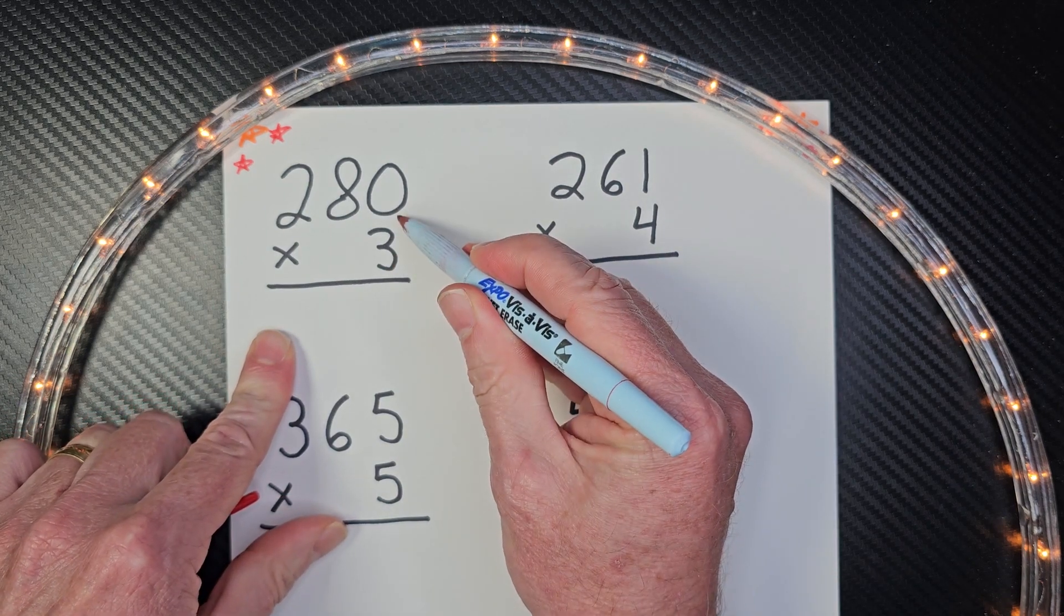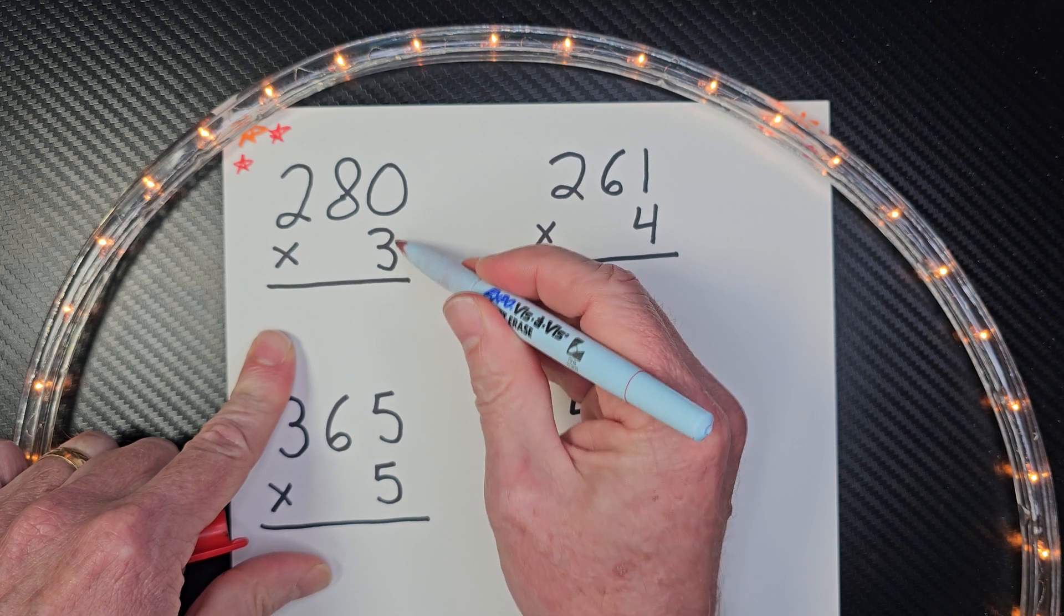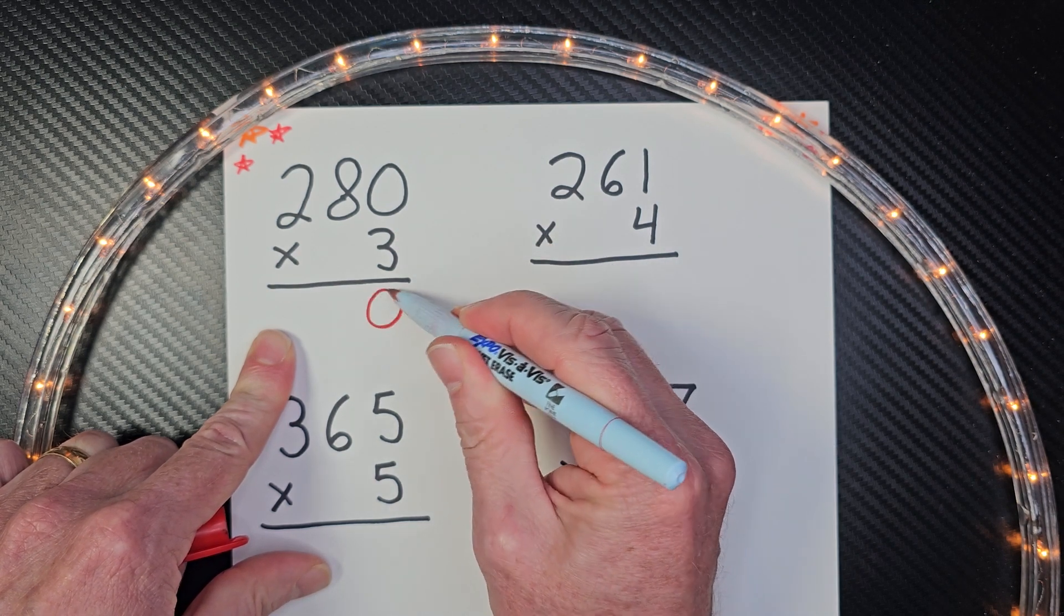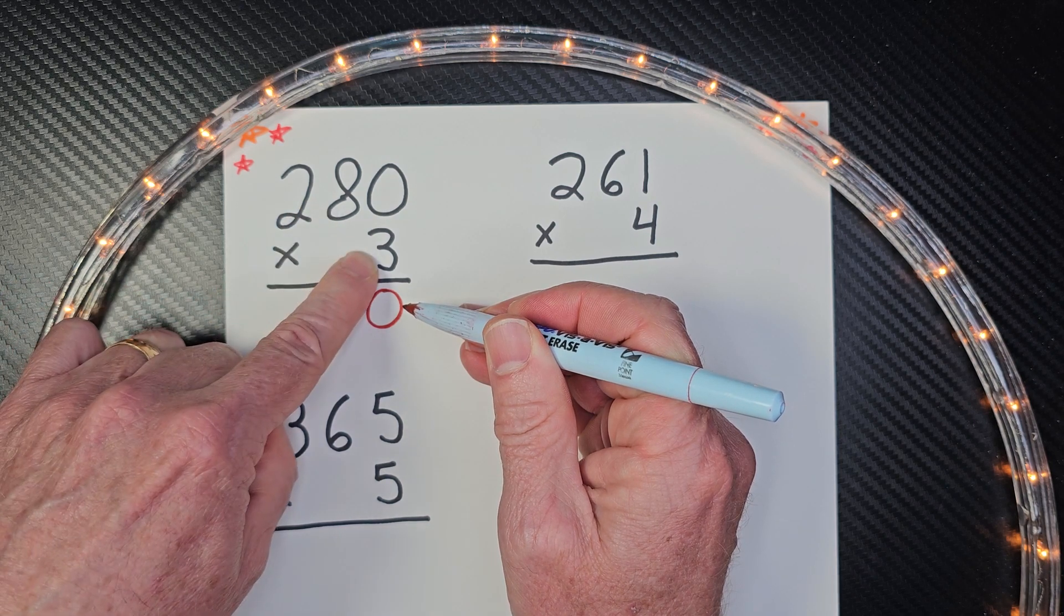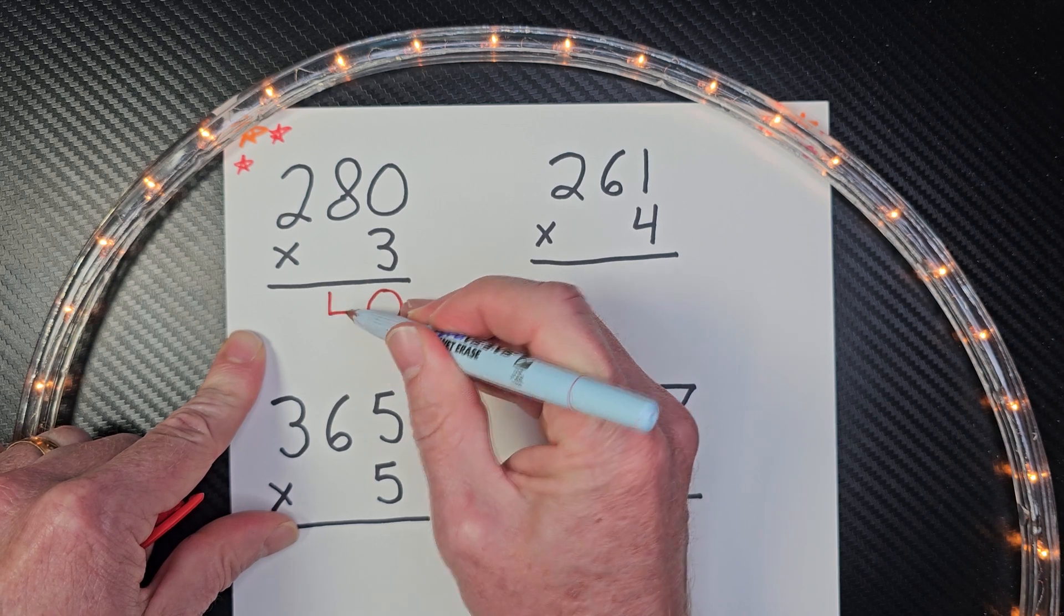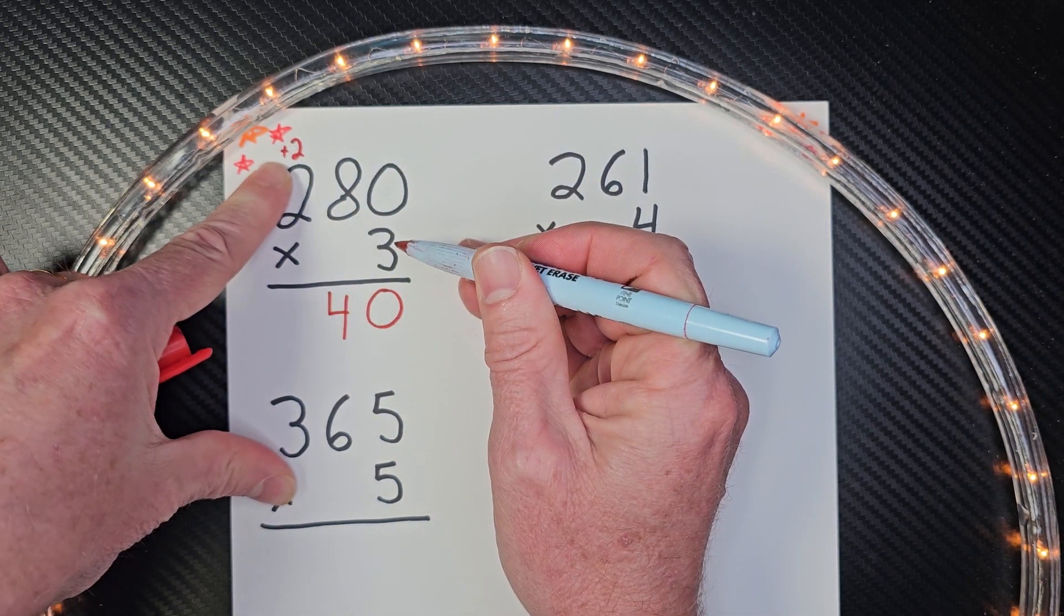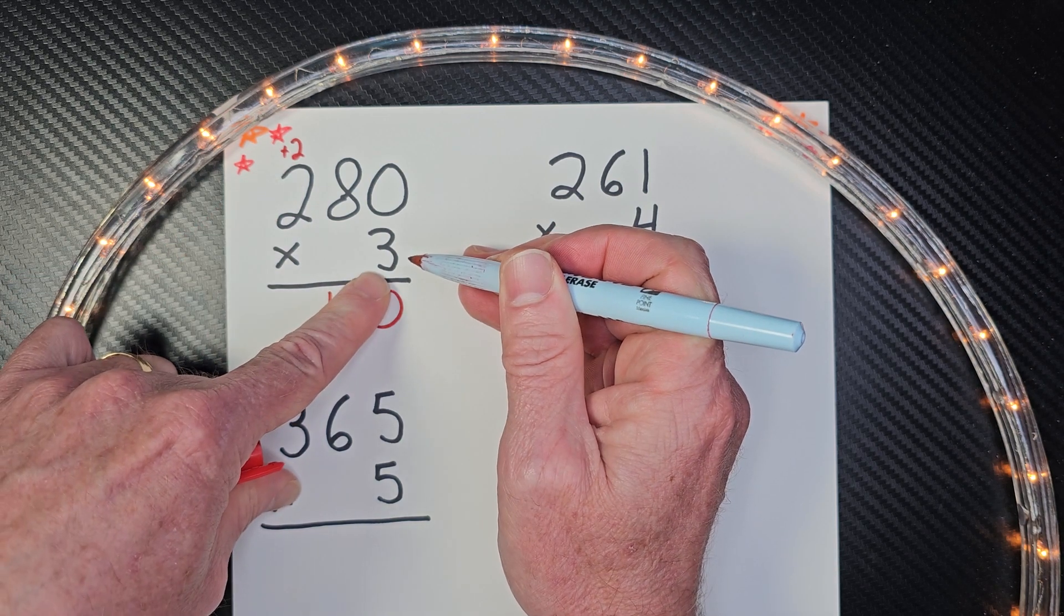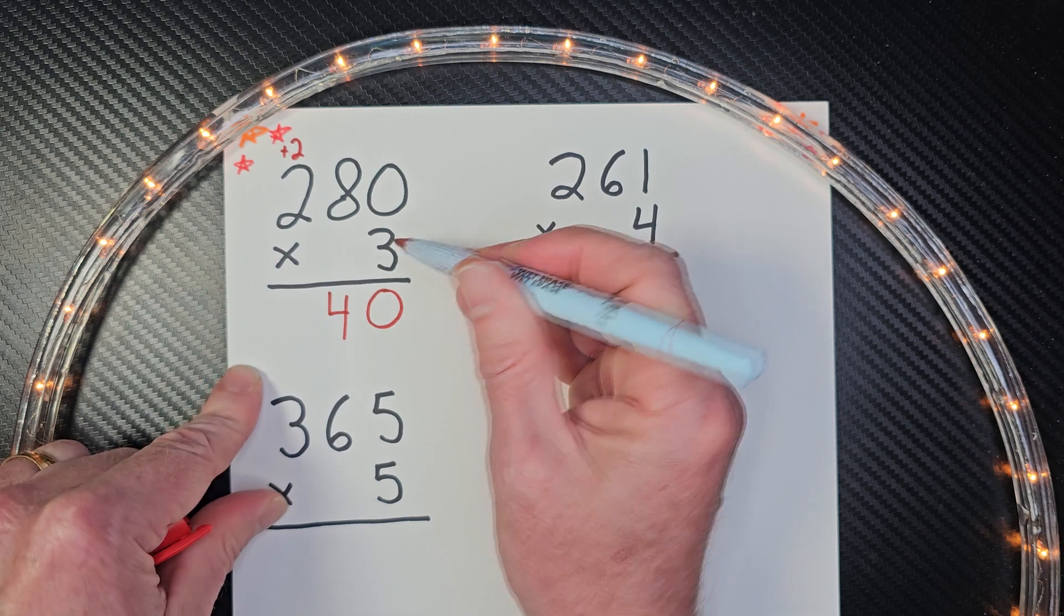So three times zero. Remember, anything times zero is zero. So three times zero is zero. I put the zero right there. And then I start to work in this direction here. Three times eight is 24. So I put the four here and I put my two up there. Now remember, I'm going to add that two.